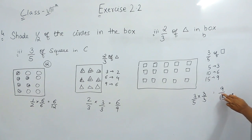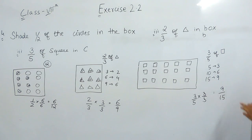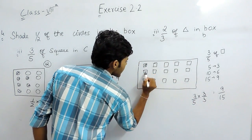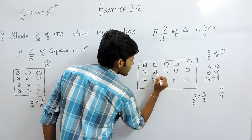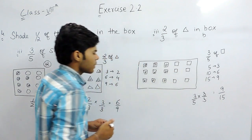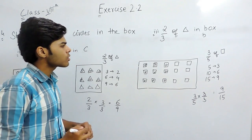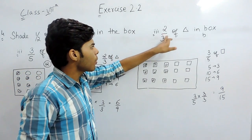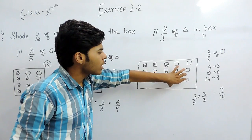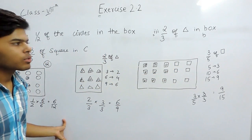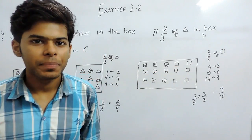This means that out of total 15 squares we have to shade any 9. So we will shade any 9 squares. This is how you can solve these types of questions — by making the denominator equal to the total number given to you. This is the simplest way to solve this question. Thank you.